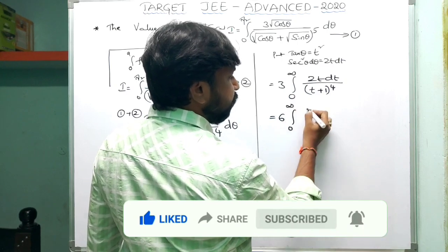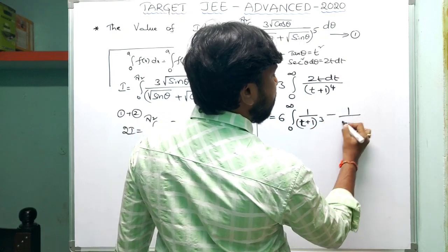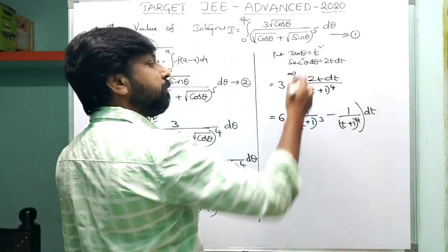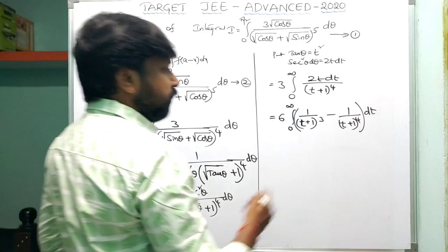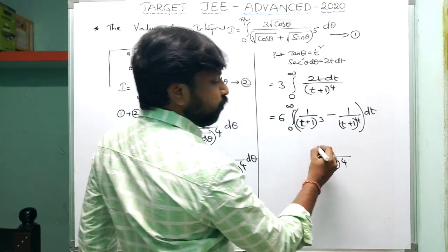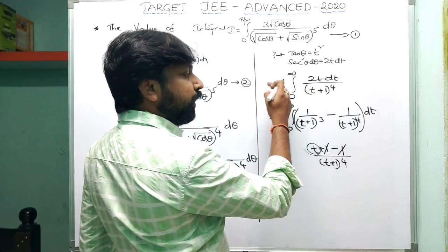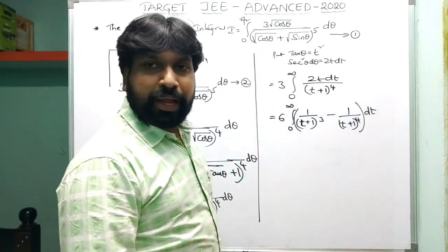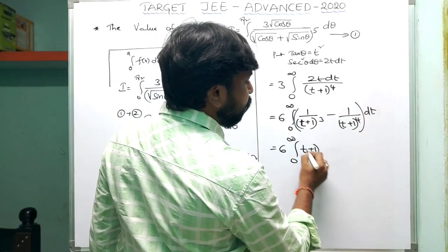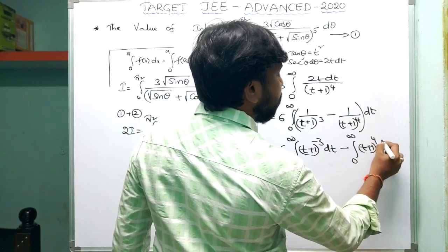Keep the factor 2 outside: 3×2 = 6, so it is 6 times integral from 0 to ∞. The integrand can be written as [1/(t+1)³ − 1/(t+1)⁴] dt, since simplifying the numerator t = (t+1) − 1, which gives t/(t+1)⁴ = 1/(t+1)³ − 1/(t+1)⁴. So the expression is 6 times [integral of (t+1)^(−3) dt − integral of (t+1)^(−4) dt].